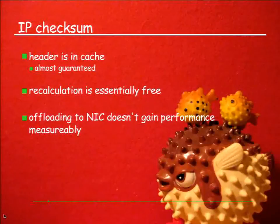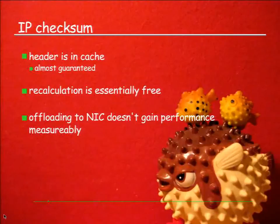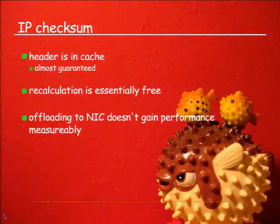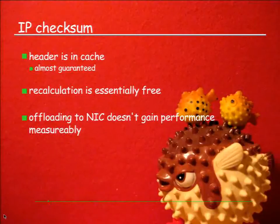The IP header is in cache - that's almost guaranteed because we're talking about the network stack just forwarding this. Recalculation is free, so don't worry. Offloading the IP checksum calculation to the network interface card doesn't make a difference anymore. I did this 12 or 13 years ago and saw a gain of around 7% to 8%. Today: not measurable.